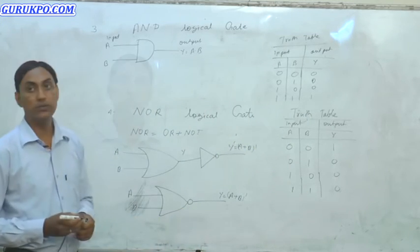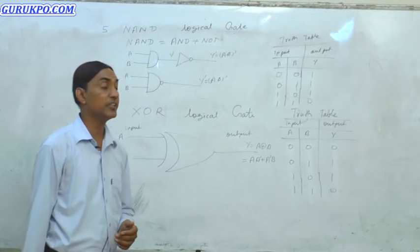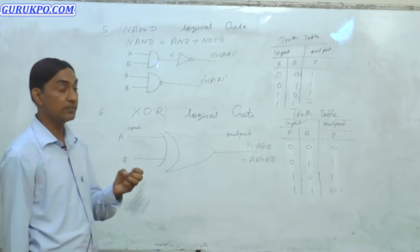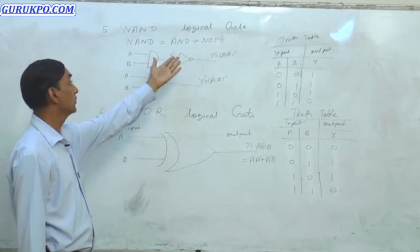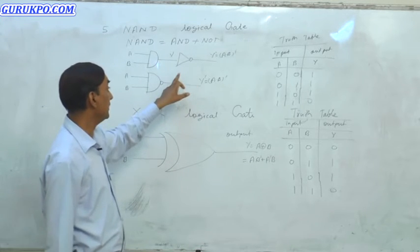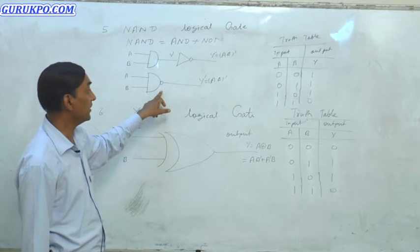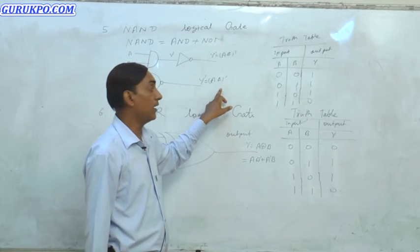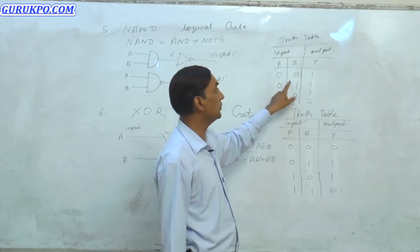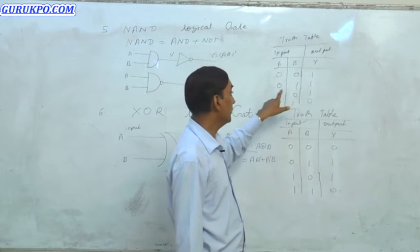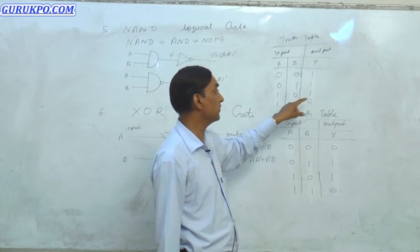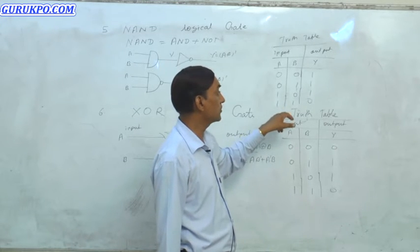The fifth logic gate is the NAND logic gate. NAND is made by AND plus NOT, and its symbol comes from combining AND and NOT gates. The formula of the NAND logic gate is Y' = (A · B) bar. Truth table: inputs 0 and 0 give output 1; inputs 0 and 1 give output 1; inputs 1 and 0 give output 1; inputs 1 and 1 (high and high) give output 0.